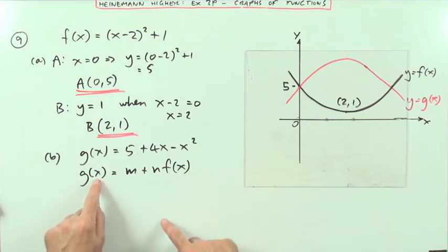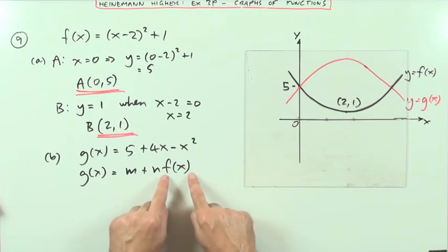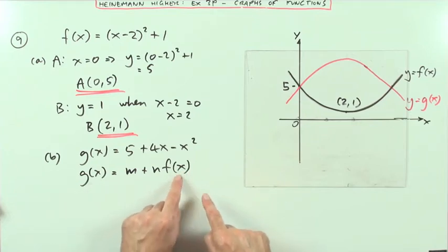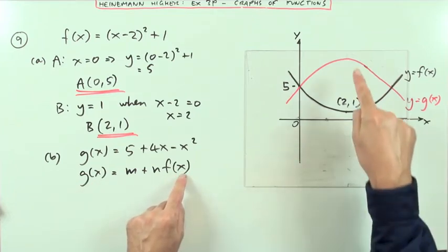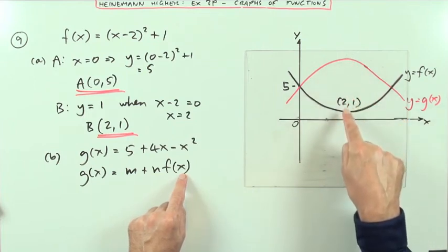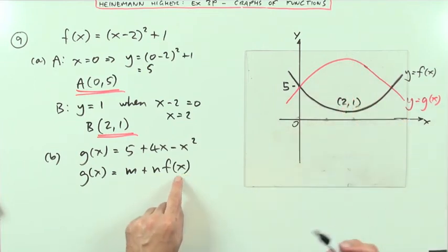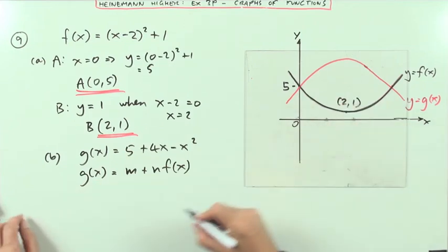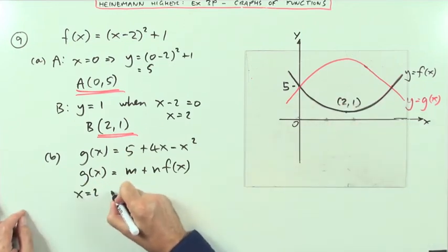But what this does say is, g(x) is this transformation of f(x), which involves no change in horizontal position. So that means g(x) must have its turning point at the same position, which is 2. So I know that at g(x), it must be x equals 2.